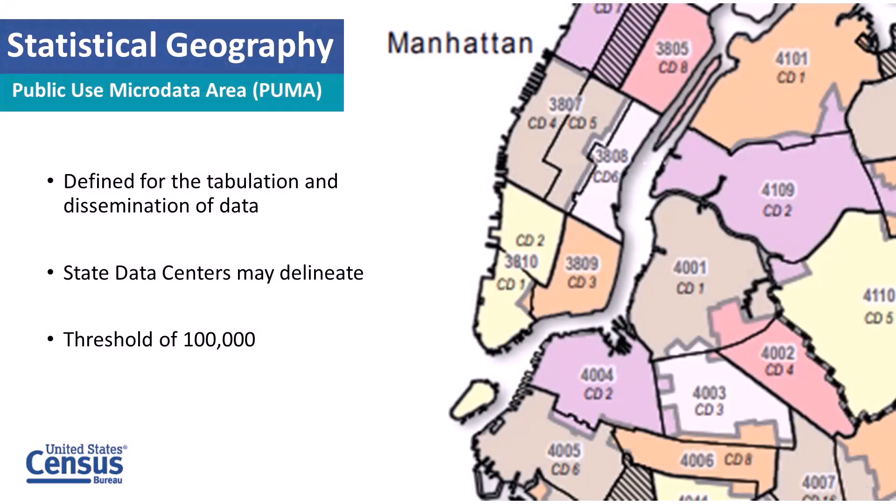We also have public use microdata areas, or PUMAs, which are good to use when working with ACS data. We work with the state data centers to delineate them, with a threshold of about 100,000 people. With PUMAs you get smaller and more precise data, but the area gets larger in population. In New York City, for example, community districts — like Community District 4 and Community District 5 — correspond to a PUMA. PUMAs used to be numbered but are now named to better reflect the area they represent.